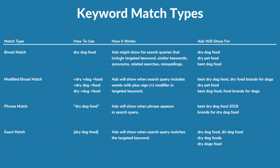Broad match ads might show for search queries that include the targeted keywords, similar keywords like dry pet food, synonyms, related searches, and misspellings — so it's really too broad in my experience. I never use broad match keywords because you're going to have synonyms and all sorts of different ads showing for keywords you're not even targeting. Your campaign is going to be impacted negatively because your ads are showing for too many unrelated keywords. You want everything to match and line up, especially in Google Ads, because that's the best way to improve your quality score over time.